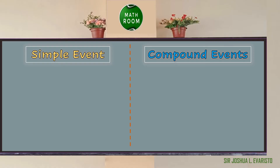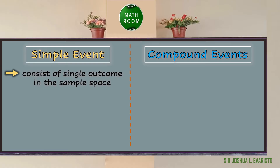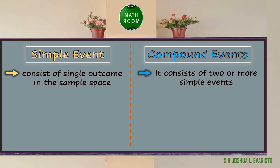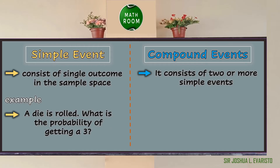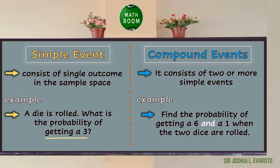We will now discuss simple events and compound events. For a simple event, it is any event which consists of a single outcome in the sample space. However, a compound event is any event which consists of more than one outcome, or simply consists of two or more simple events. For example, for a simple event: a die is rolled — what is the probability of getting a 3? The single event is getting a 3. For a compound event: find the probability of getting a 6 and a 1 when two dice are rolled — we have two events: getting a 6, and getting a 1.